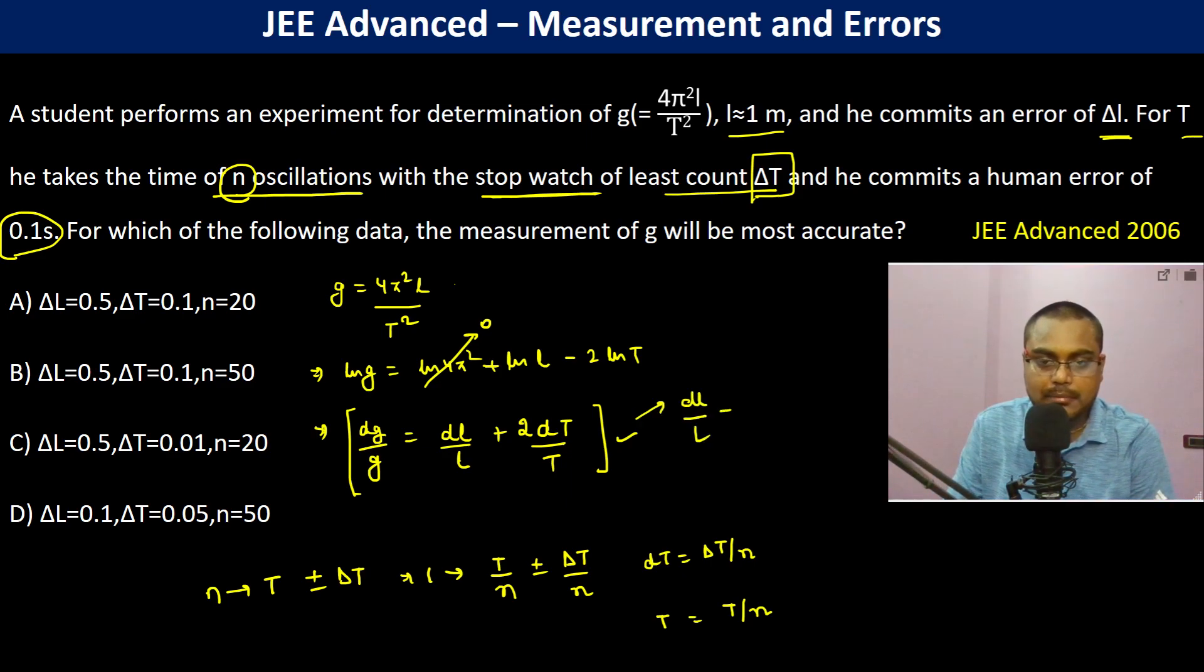So dL by L plus 2 into delta T by N by T by N. Now let us see which is going to be most accurate.